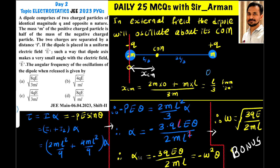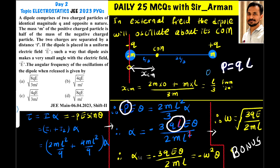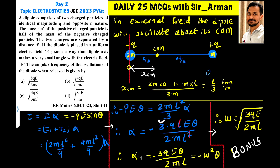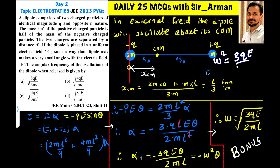So the total moment of inertia is I = 2ml²/3. Applying τ = Iα with the restoring torque gives: −pEθ = (2ml²/3)α. Solving for α: α = −(3pE)/(2ml²) × θ. Since p = ql, substituting gives α = −(3qE)/(2ml) × θ. Comparing with the general SHM equation α = −ω²θ, we get ω² = 3qE/(2ml), so ω = √(3qE / 2ml).